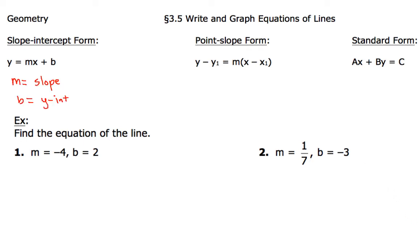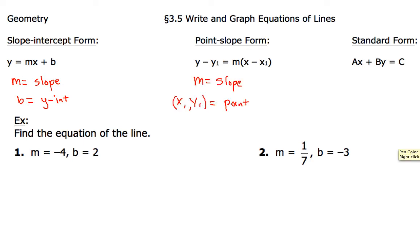For our next type of equation, we're going to have point-slope form. That's going to take the form y minus y1 equals m times x minus x1. Again, m is going to represent the slope, and x1, y1 represents a point. Sometimes you might be given only one point, and other times you might be given two points, so it really depends on what information we're given.